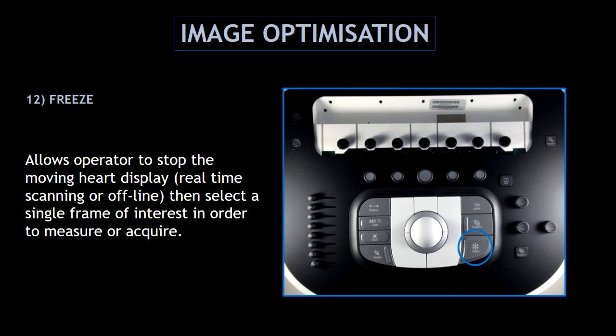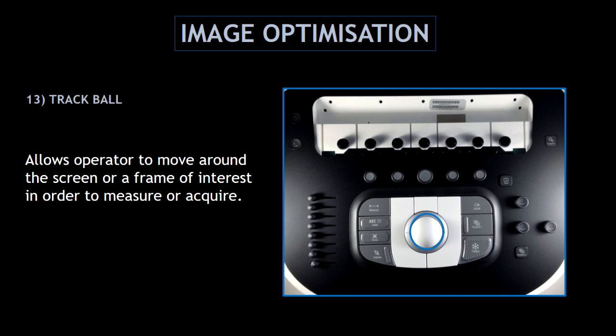Believe it or not, the freeze button is another image optimization feature, because this allows the operator to stop the moving image display and then select a single frame of interest in order to measure or acquire. Normally, we can find the freeze button next to the trackball. Our last feature and the most important one is the trackball, because this allows the operator to move around the screen and to select a frame of interest in order to measure or acquire.